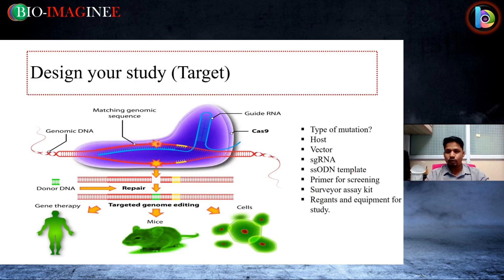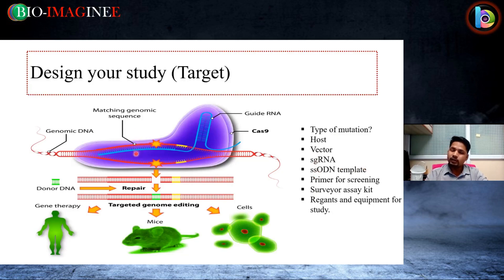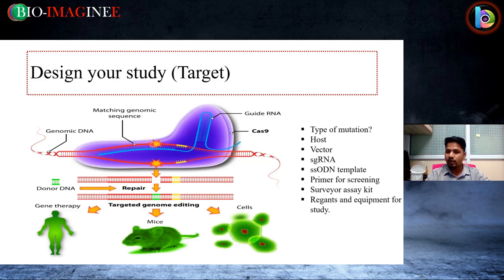The target region is where we want to create the mutation. We design the guide RNA to match at this region, with the PAM site at three base pairs upstream. There will be a cleavage, and then a repair mechanism starts. In homology-directed repair, a template is required — that template will be our donor DNA. The repair mechanism incorporates across 20 to 50 base pairs upstream and 20 to 50 base pairs downstream. We can design a donor DNA of 40 to 100 base pairs and put the desired mutation — a single mutation or some base pair deletion — into that donor DNA.